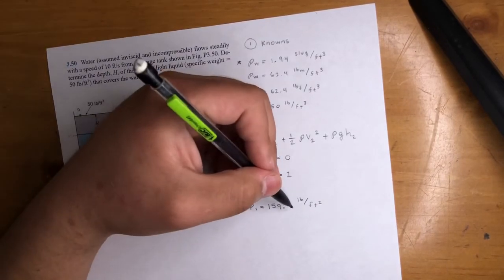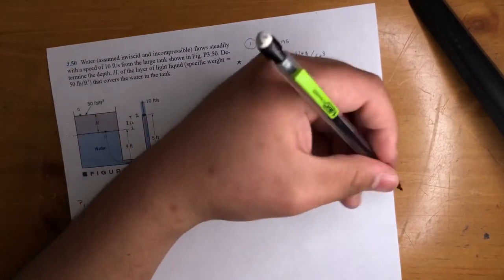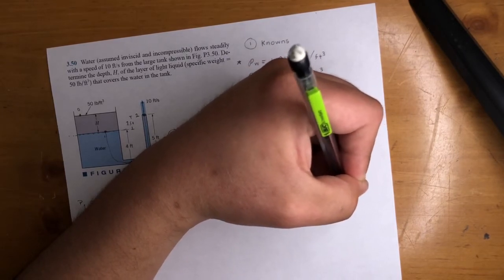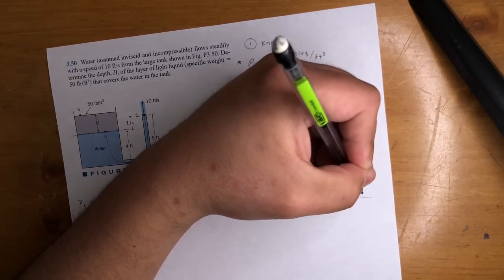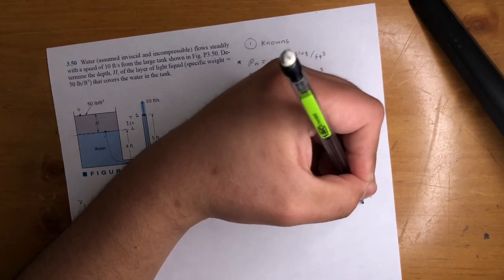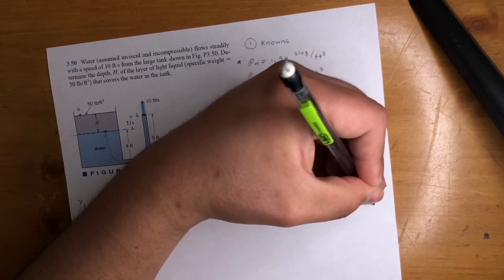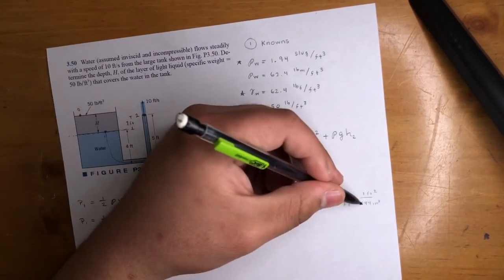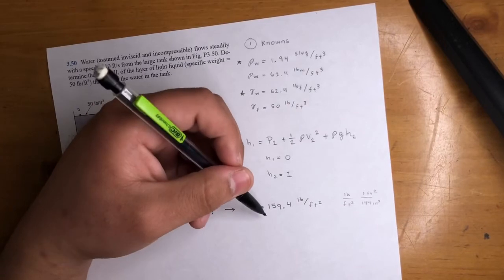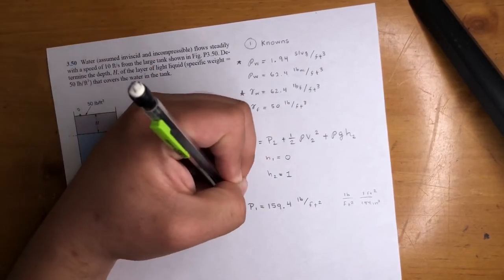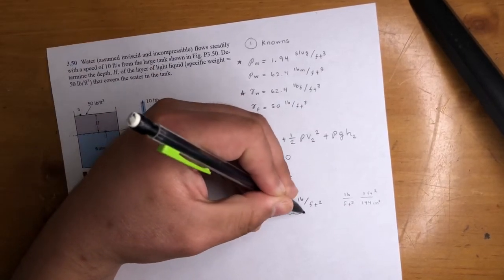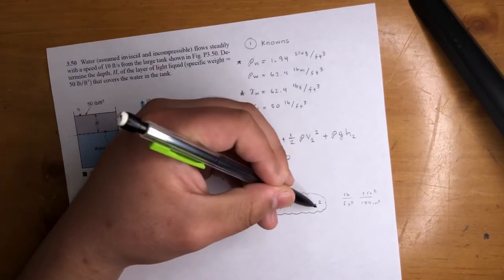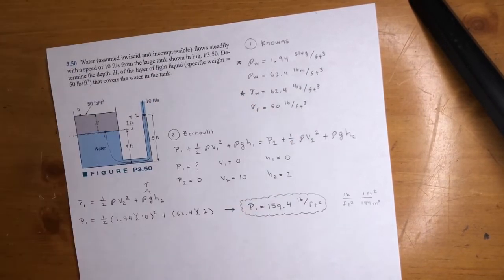If you want to do PSI, you would have to, if you have pound per feet squared, and then one foot, and then 144 inch squared, right? You would have to divide this number by 144 to get PSI. But this is 159.4 pound per feet squared, not inch squared, okay?